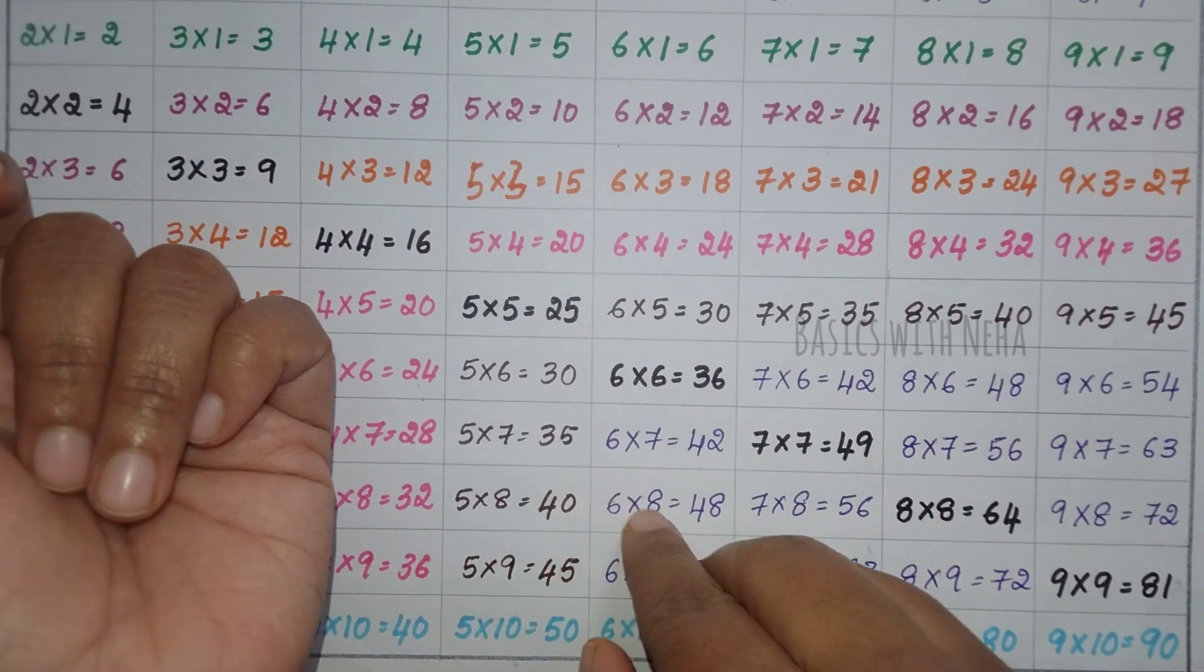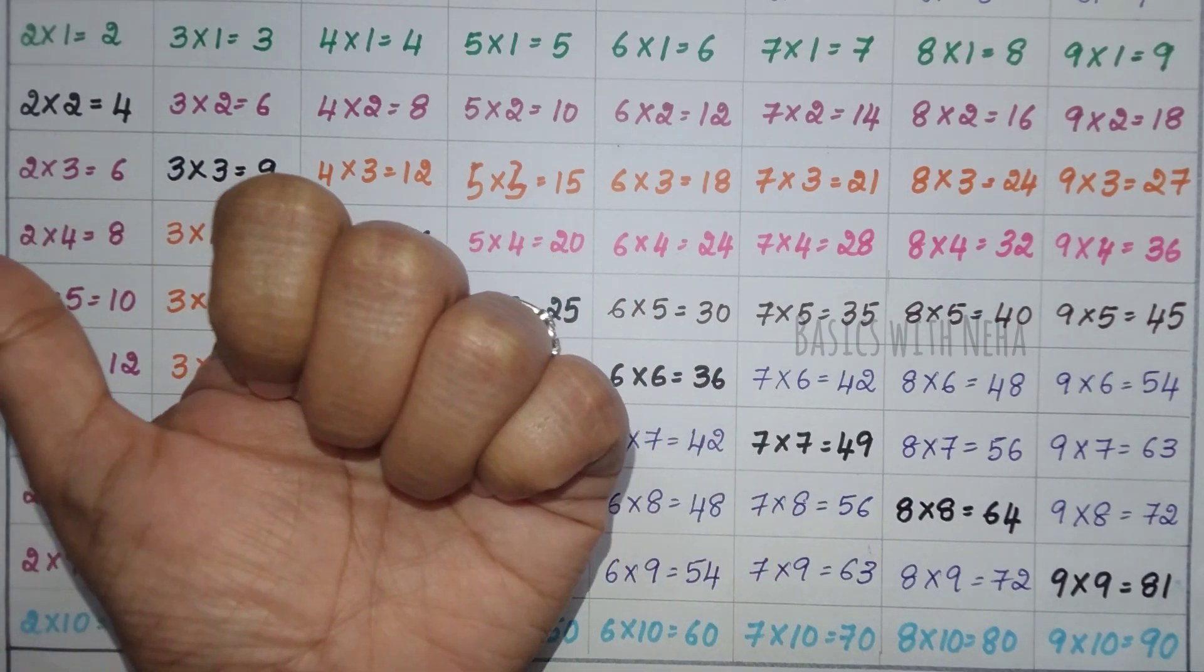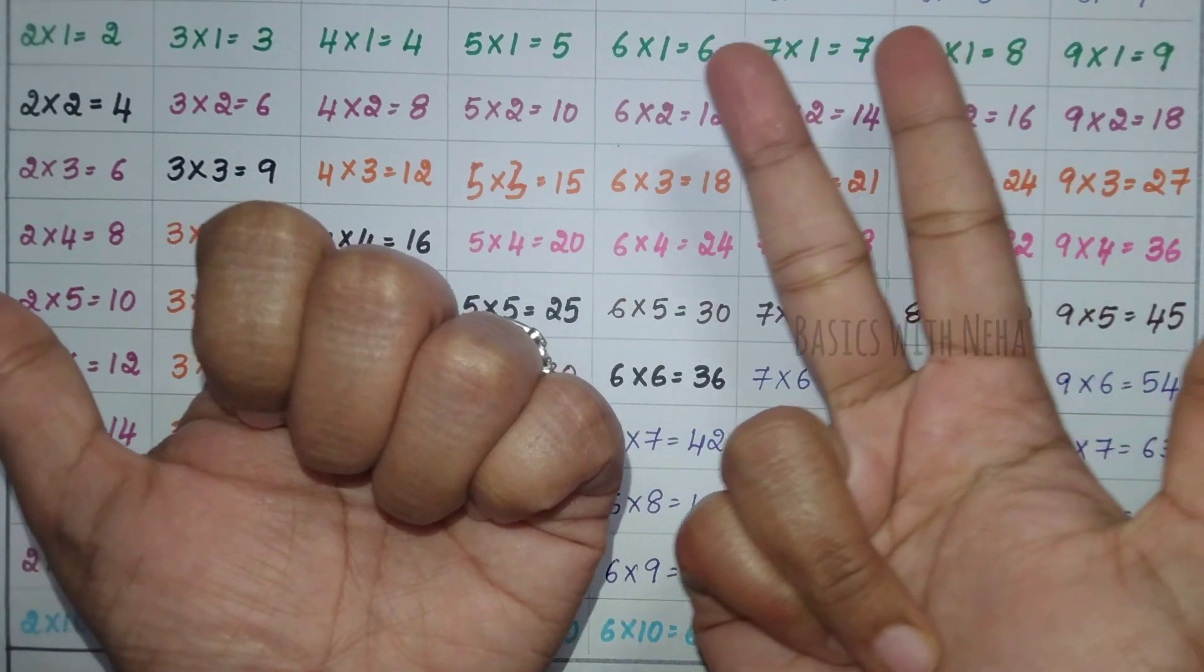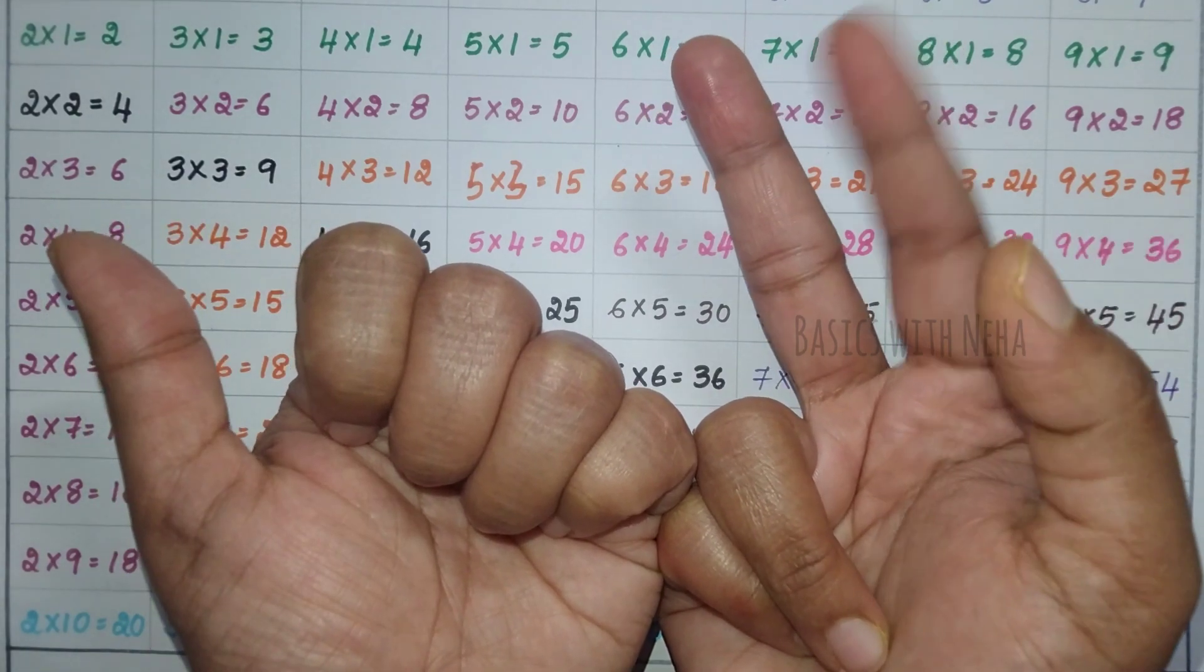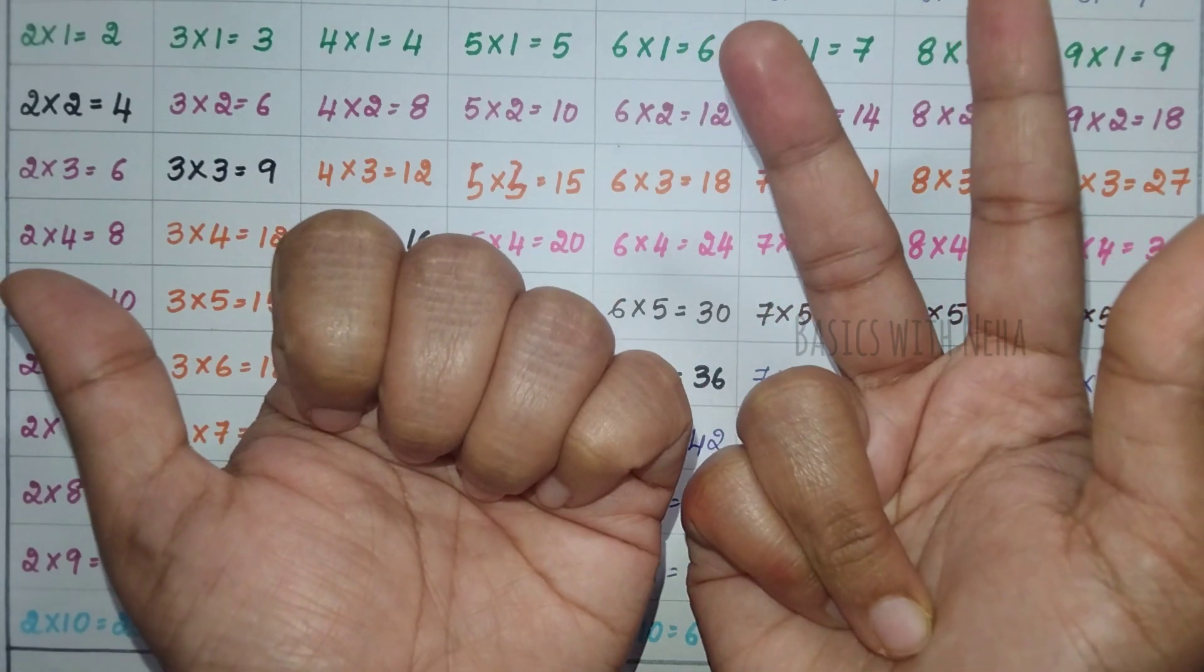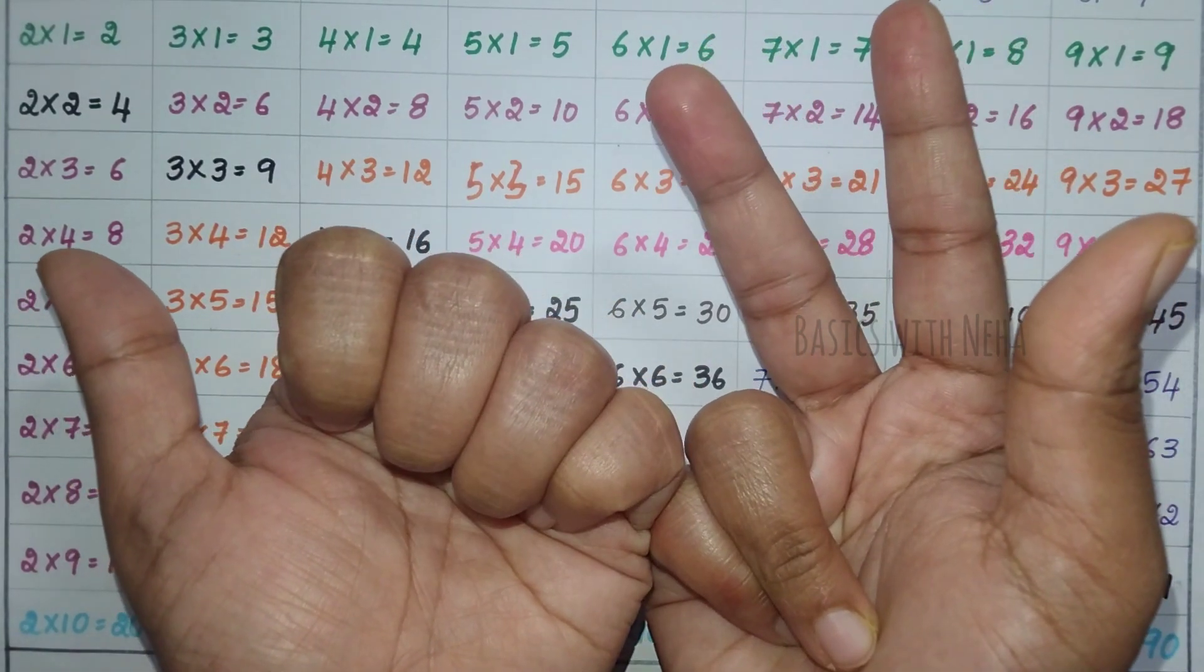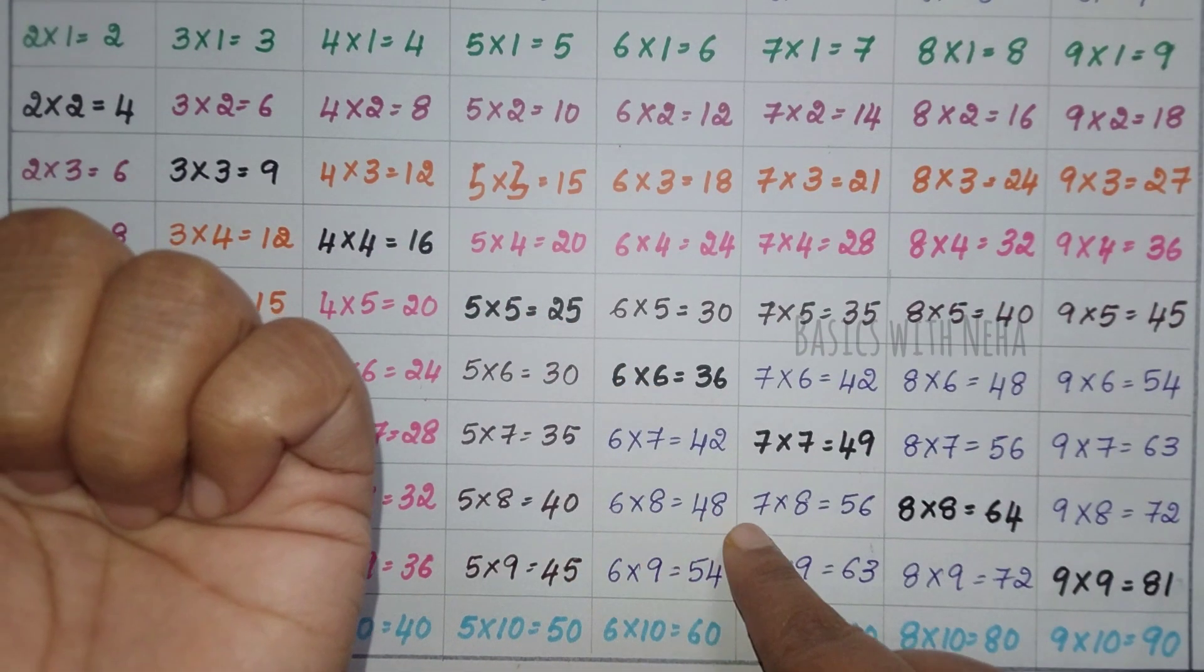Now, for example, 6×8s. Six, this is the only one. 6×8s - 6, 7, 8. Now count the number of fingers that are open: 1, 2, 3, 4 - that's 4. Here, closed fingers are 4. Here, closed fingers are 2. 4×2s are 8. So the answer will be 48. 6×8s are 48.